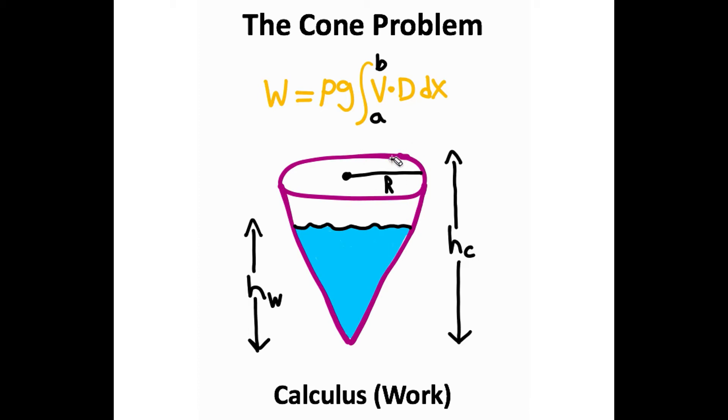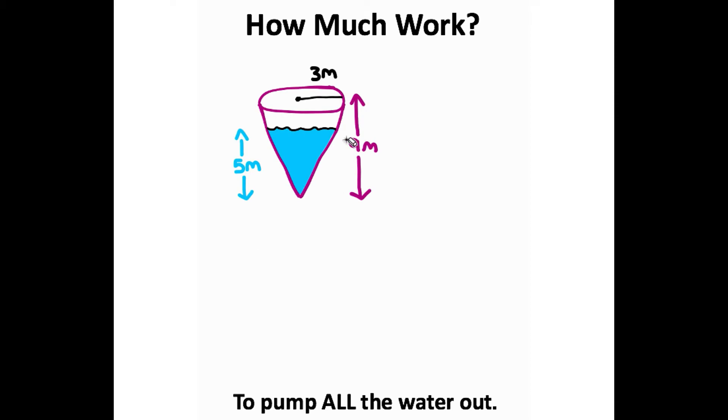Let's talk about solving the work problem that involves an upside-down cone in calculus. Normally for this problem, you're given the height of the cone, the height of the water, and the radius of the cone as well. It's a circular cone, as you can see.